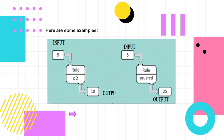Here are some examples. Our input is 5 and our rule is multiply by 2. 5 multiplied by 2 is 10, so 10 is our output. Here is another example: our input is 5 and the rule is squared. 5 squared is 25, so our output is 25. Easy, right?